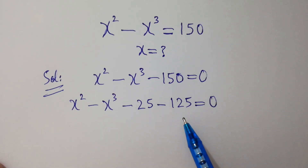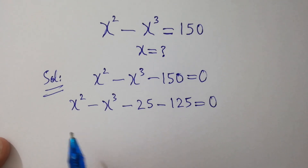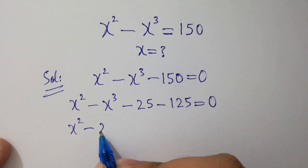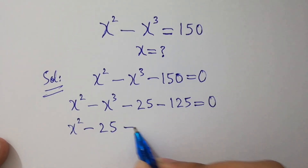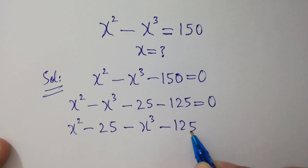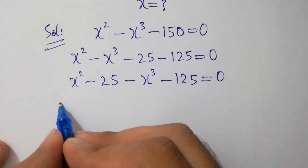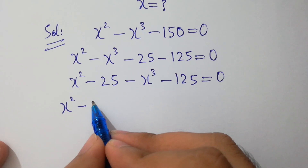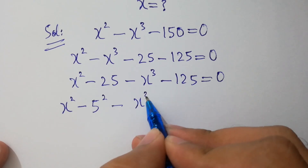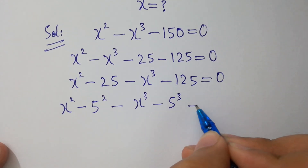And x cubed pairs with 125, which is 5 cubed. If we simplify, we group: x squared minus 25, and then minus x cubed minus 125. So x squared minus 5 squared, and minus x cubed minus 5 cubed equals 0.